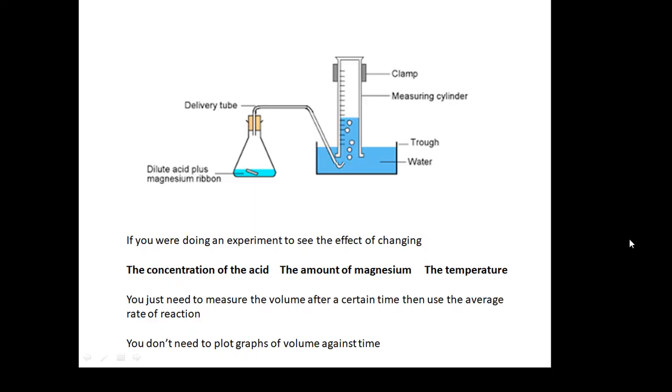just measure how much gas is produced in a couple of minutes. I mean, you can always do a preliminary, a practice experiment to see if that's a suitable time. But you don't need to take lots and lots of readings of volume. Just one reading of volume after a certain time will tell you what you need to know. You don't need to plot graphs of volume against time. You would plot a graph of the rate of reaction against concentration or temperature. And then the rate of reaction is the volume after two minutes divided by two.